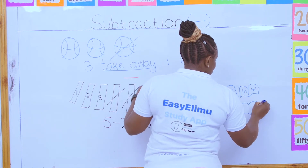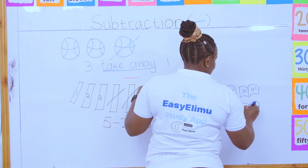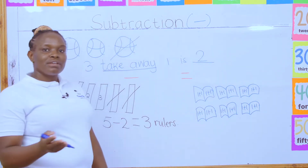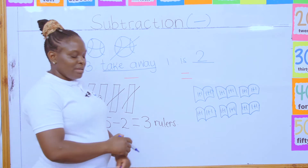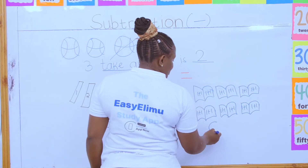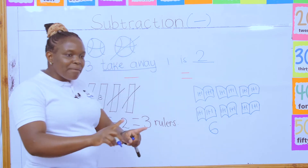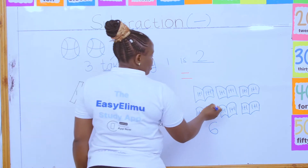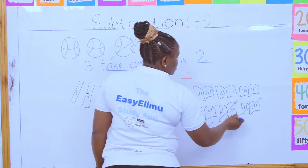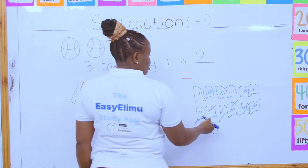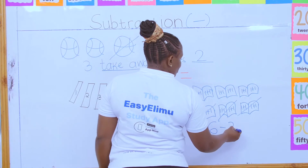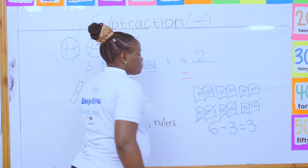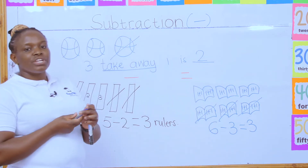When Mr. Opio came for the lesson, do you know how many books he came with? Mr. Opio only came with three books. There were six, but when he came back he only had three. So how many books were missing? We are missing three books.